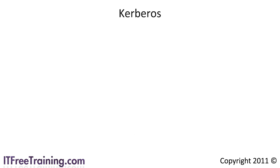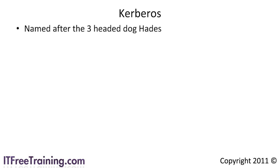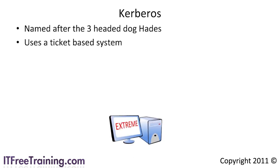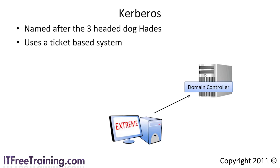The Kerberos authentication system provides an alternative to NTLM and addresses some of its shortfalls. The system itself is named after the three-headed dog from Greek mythology that guards Hades. Kerberos uses a ticket-based approach. When a client computer requests access to a server or service on the network, the user must be authenticated. To ensure security, the authentication process should be heavily encrypted and complex enough that it cannot easily be broken. However, when you have a lot of servers or services on the network, a complex authentication system uses up a lot of resources.